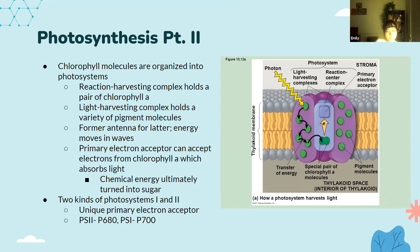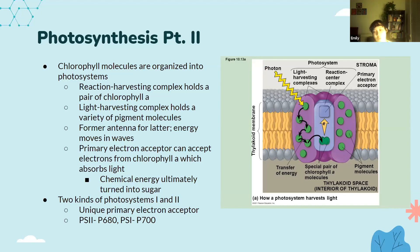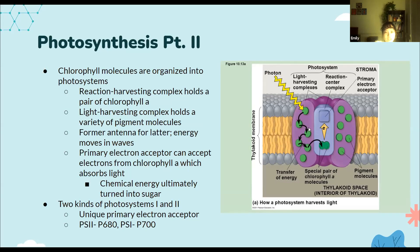There are two main kinds of photosystems: Photosystem 1 and Photosystem 2. They're numbered in the order they were discovered, not the order reactants undergo them. They each respond to different wavelengths of light. Ultimately, you have a light-harvesting complex with a lot of chlorophyll that absorbs a lot of light. This goes into the primary electron acceptor, which absorbs the light and turns it into chemical energy, which ultimately makes the sugar.